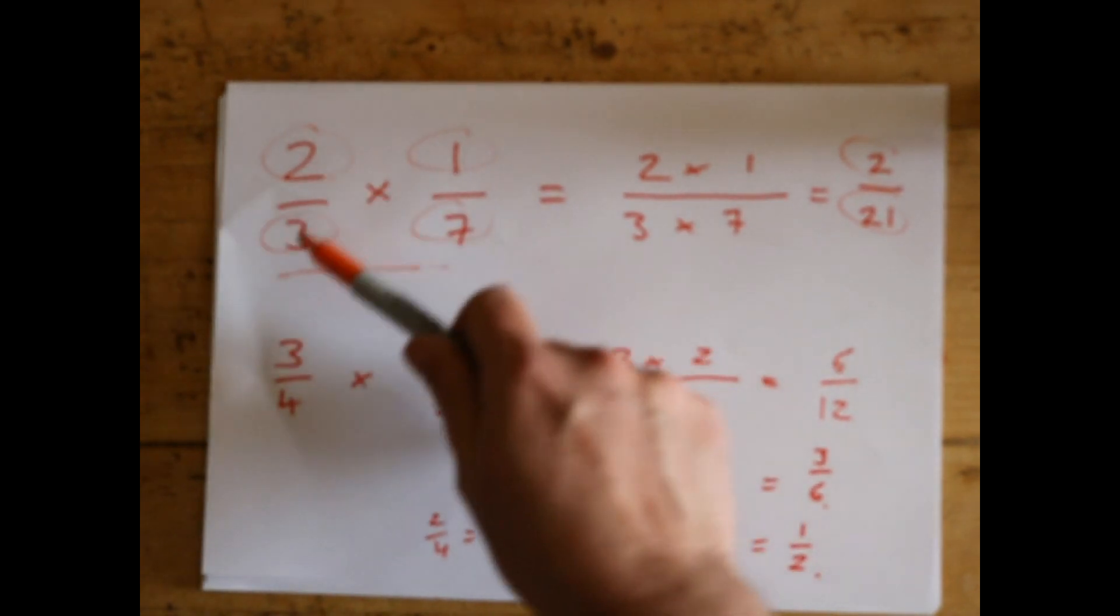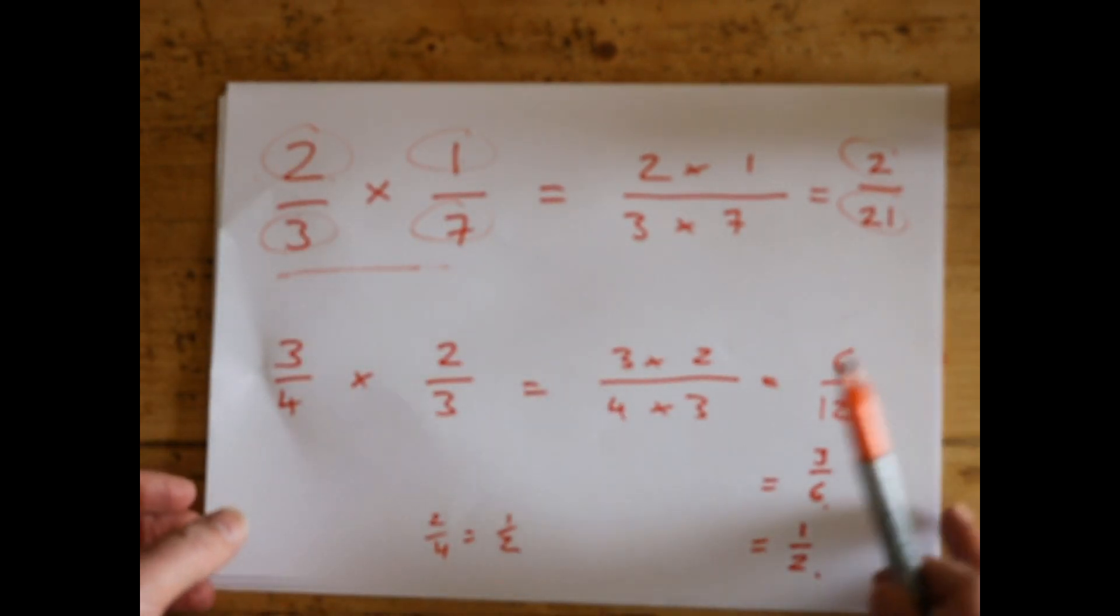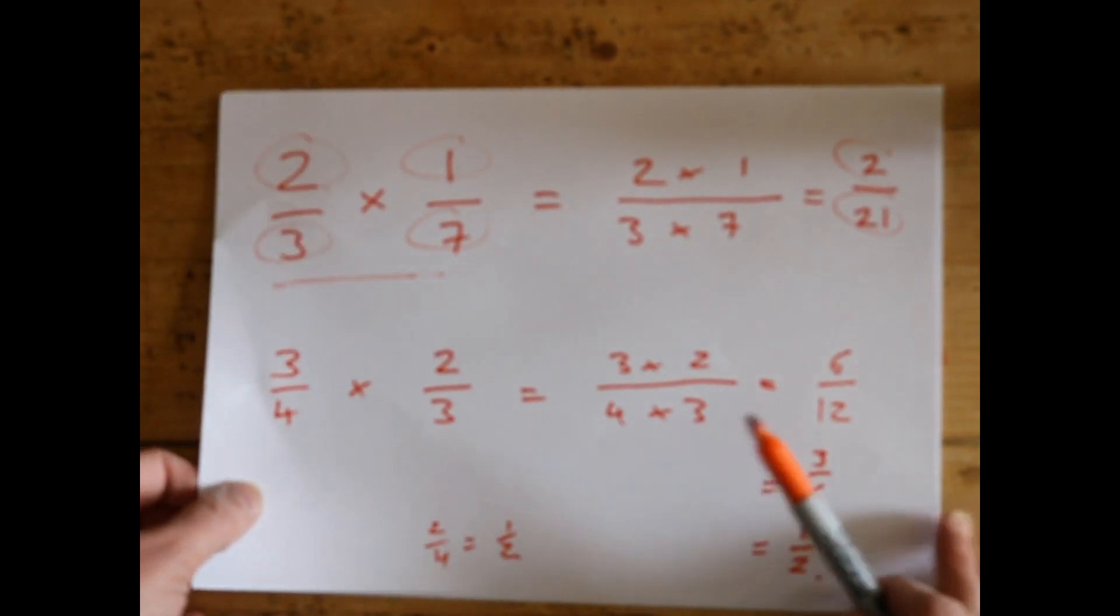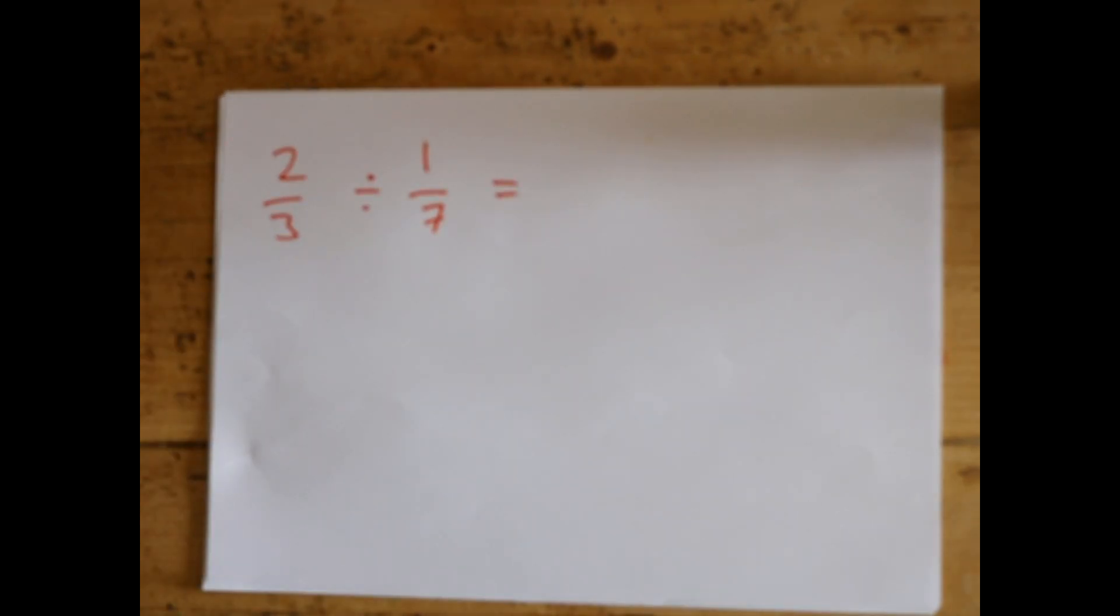That's how you times fractions - dead easy. Don't be confused; just times the tops together and times the bottoms. It's just two sums, and at the end you might have to simplify. Now the trick is with divide. Dividing fractions, you think 'Oh my god, I don't like dividing fractions,' but this is dead easy when you know this little trick.